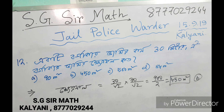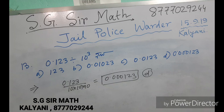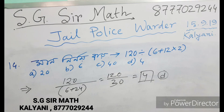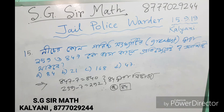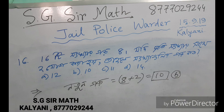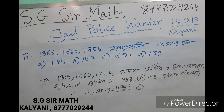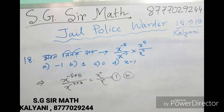એકટી બરરાકાર જોમીન કણ્ન તીરિશ મીટાર — a rectangular land of thirty meters. ઇટા-એટા દાાર વિવાજ્ય — the area calculation.